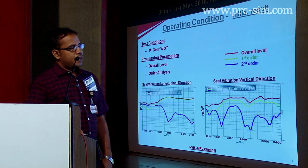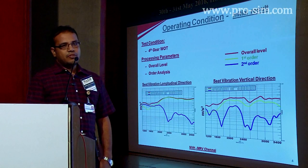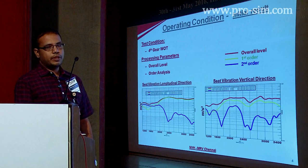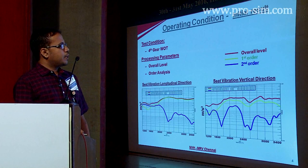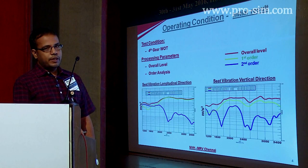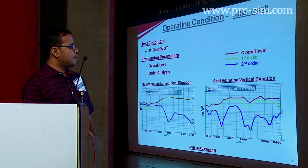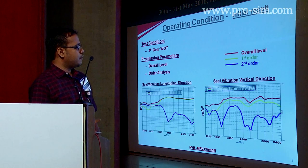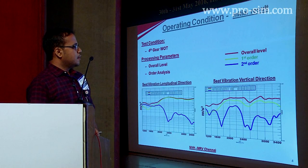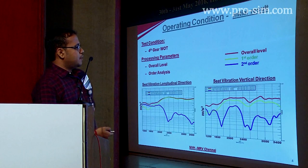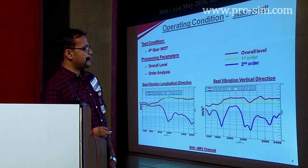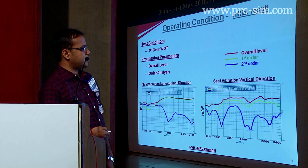Regarding the operating condition, the NVH levels were more at 4th gear wide open throttle condition. So we fixed 4th gear wide open throttle as our operating condition. When we compared all the orders, the first order was dominant compared with the second order. The red is the overall level and this is the first order — much more contribution is coming from the first order.